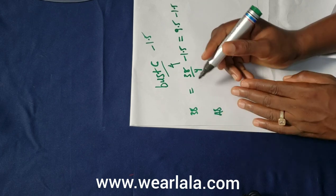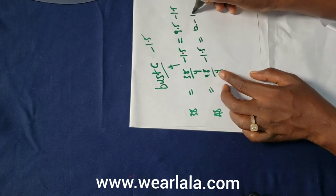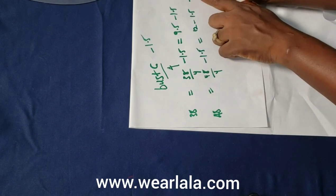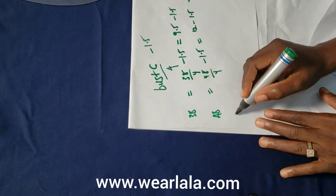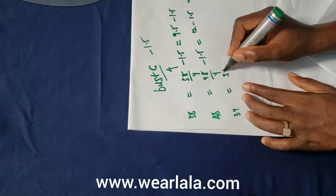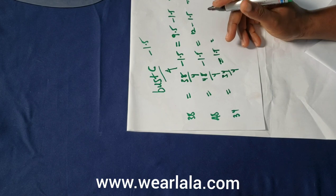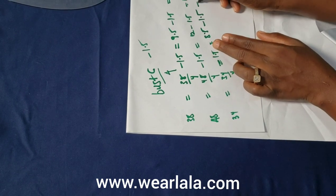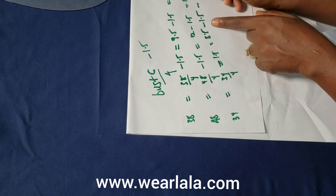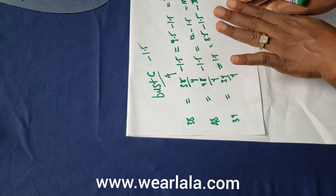For a plus size — say bust is 48: 48 divided by 4 is 12, minus 1.5 gives 10.5. So for a bust circumference of 48, the bust span is 10.5. You can't use 8 for everybody. Some people use 8 or 7 for anyone and then run into trouble after sewing. For a smaller size — bust 34: 34 divided by 4 is 8.5, minus 1.5 gives 7. So for someone with a bust of 34, the bust span is 7. You can see that bust span is not constant — it depends on the bust circumference.